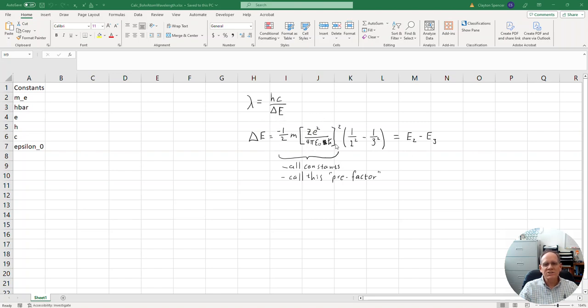There's this big collection of constants out front. m is the mass of the electron, Z would be the charge on the nucleus or the number of protons. For a hydrogen atom we just have one. E is the fundamental unit of charge on a proton. Epsilon naught is the permittivity of the vacuum, and h bar is Planck's constant divided by 2 pi. All these constants, I'm just going to call that the pre-factor. It turns out that this collection of constants actually has a name, and it was determined even before Niels Bohr. It's called the Rydberg constant.